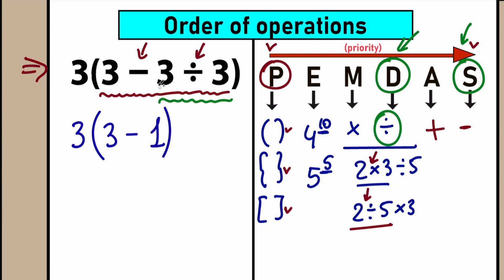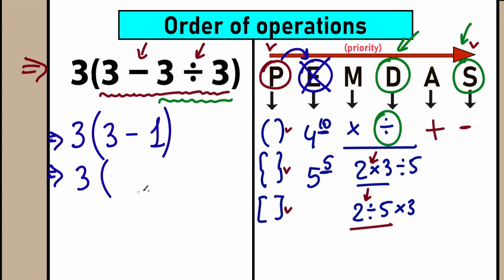We complete this division step. But before going to the next step, after evaluating division inside the parentheses, we need to subtract 3 minus 1 to complete the parentheses part. Then we go to the next step: Exponents. But we don't have any exponents in this question — no powers like 3 squared — so we can skip this part. So we complete the parentheses: 3 minus 1 equals 2, giving us 3 times 2.